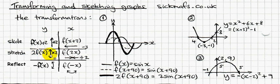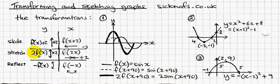Why does multiplying stretch? Imagine the maximum point of a graph is 1 — if you times by 2, that becomes 2. The minimum of -1 becomes -2. So timesing by 2 effectively stretches because it makes all positive numbers bigger and all negative numbers more negative — it goes both ways. Conversely, 2x inside the function squeezes: all the x values are halved. Times by 2 outside doubles all the y values.